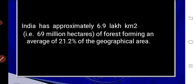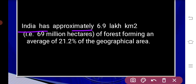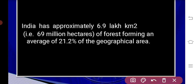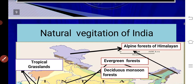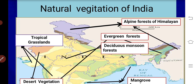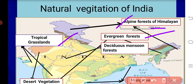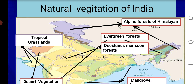India has approximately 6.9 lakh square kilometers of forest, forming an average of 21.2 percentage of the geographical area. In our Karnataka total, the natural vegetation of India includes alpine forest of Himalaya, tropical grasslands, evergreen forest, deciduous monsoon forest, desert vegetation, and mangrove forest.